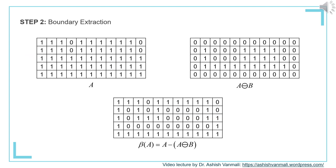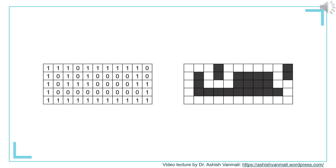The second step is to extract the boundary by subtracting the result of erosion from the original image A. The original image A is shown in the first figure, the result of erosion in the second figure, and when we subtract the erosion result from the original image, the corresponding result is the extracted boundary, shown in the third figure. This process has actually extracted the boundary of the object in the original image A.